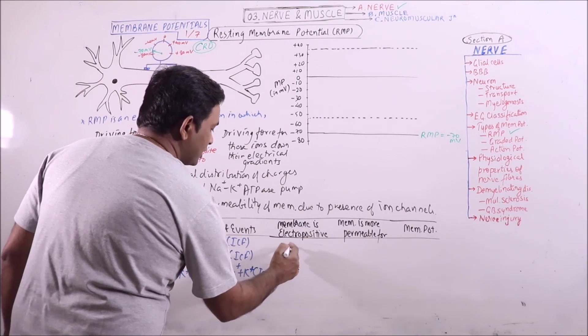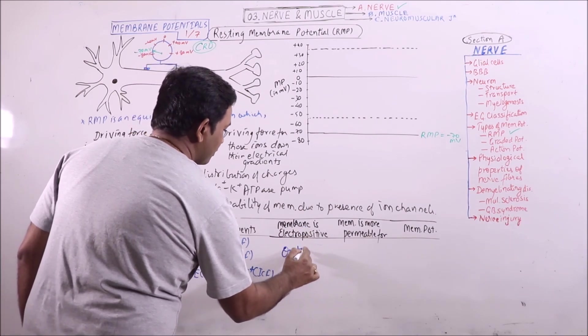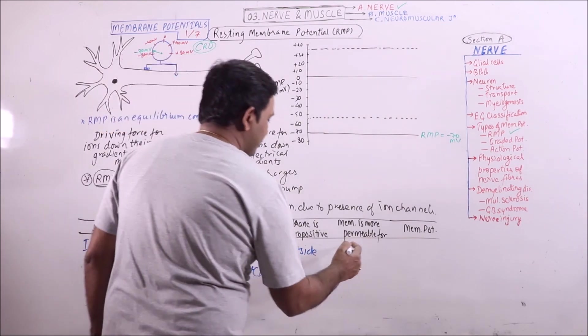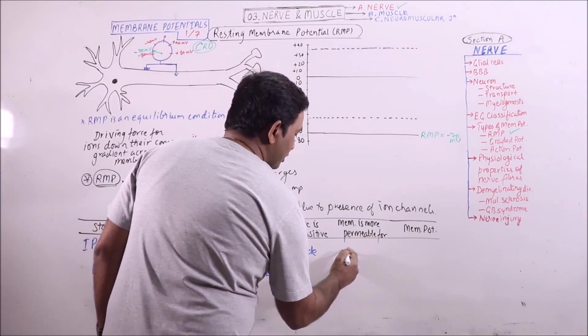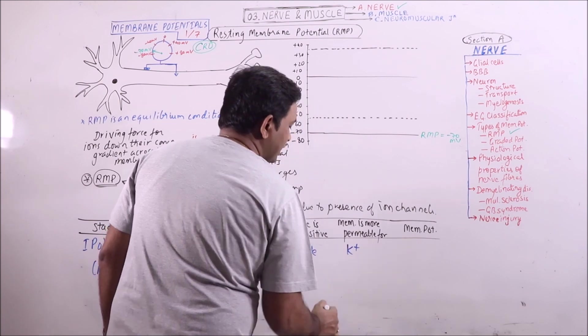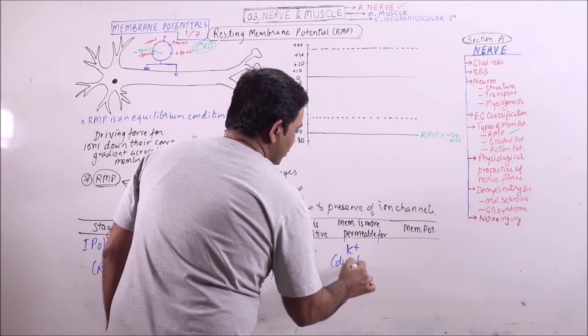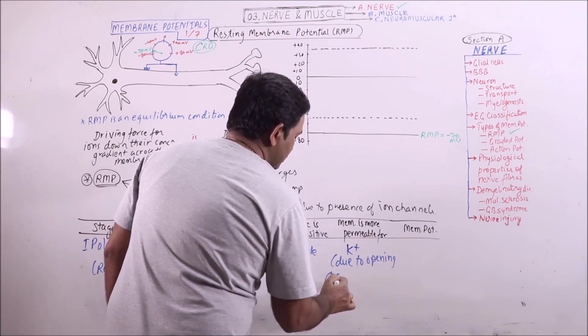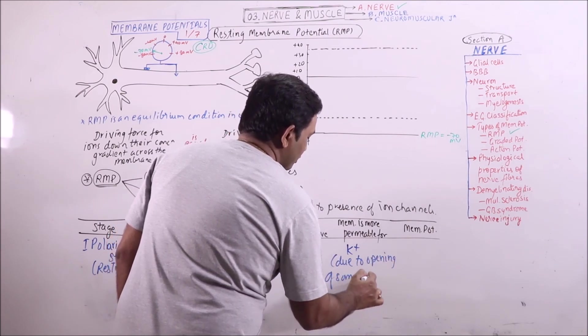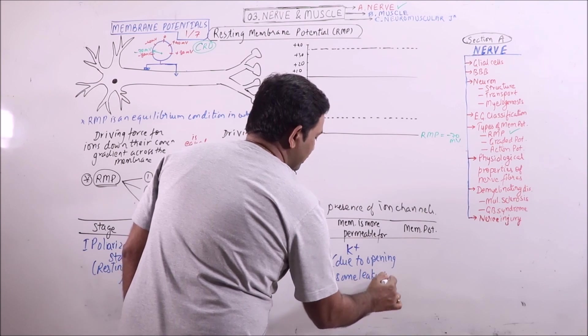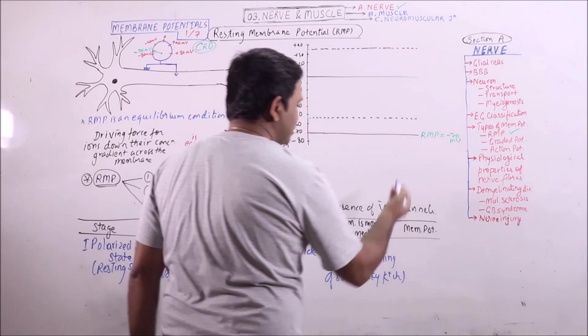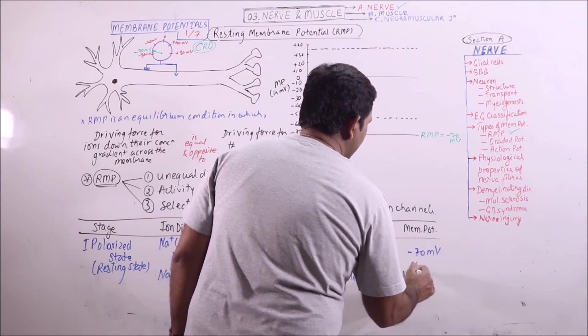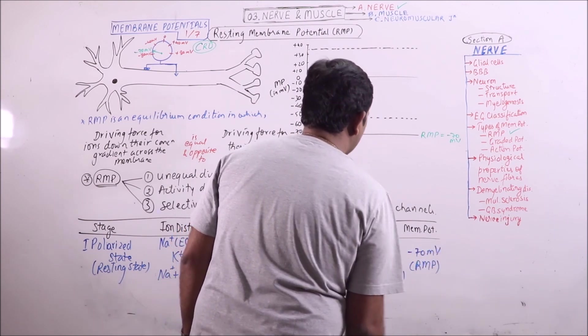That's why the membrane is electropositive outside. Some leaky potassium channels are always open there. So, the membrane is permeable for potassium due to opening of some leaky potassium channels. And the membrane potential which will be observed in this condition is minus 70 millivolts, which is also known as RMP.